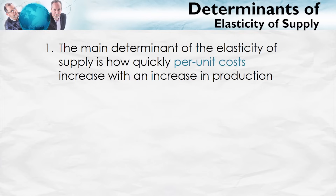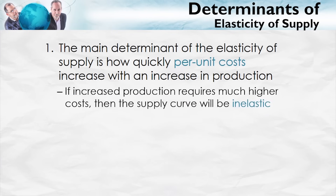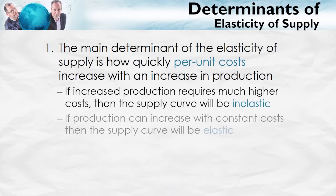The main determinant of the elasticity of supply is how quickly per unit costs increase with an increase in production. If increased production requires higher costs, then the supply curve will be inelastic. On the other hand, if production can increase with constant costs or without increasing per unit costs very much, then the supply curve will be elastic.